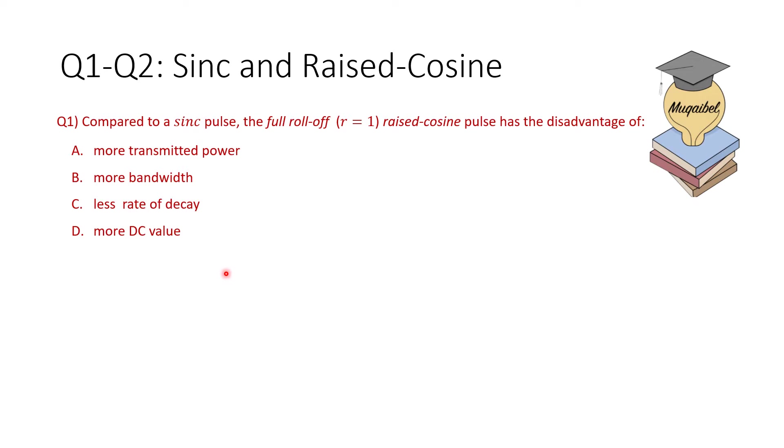I'll be stating the answer next. The correct answer to this question is B, the bandwidth required for roll-off factor compared to sinc is more, and that's the disadvantage.